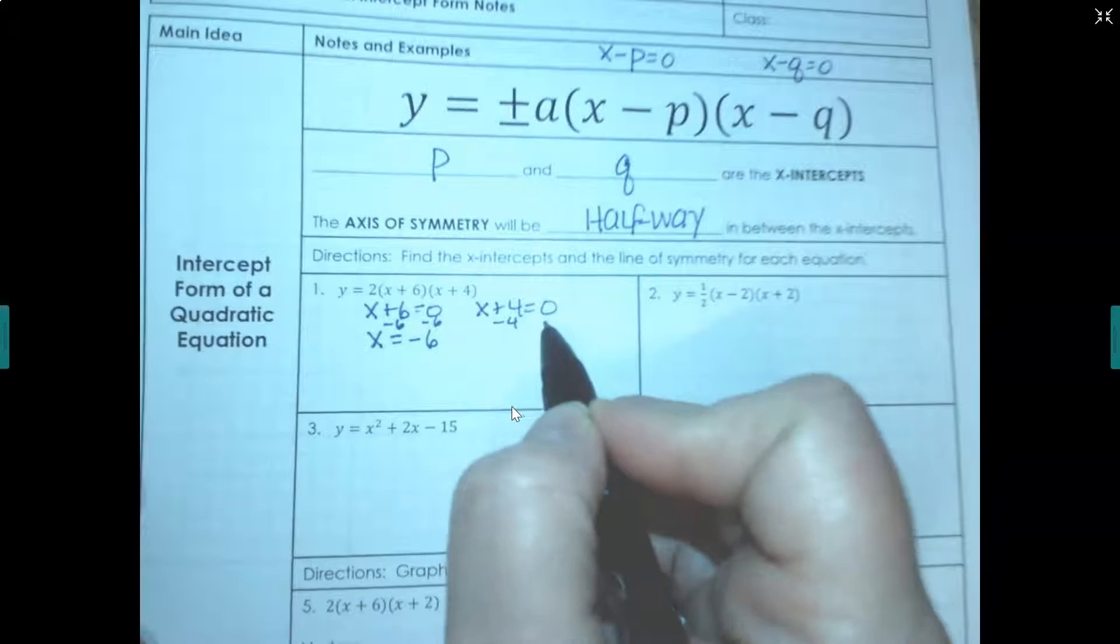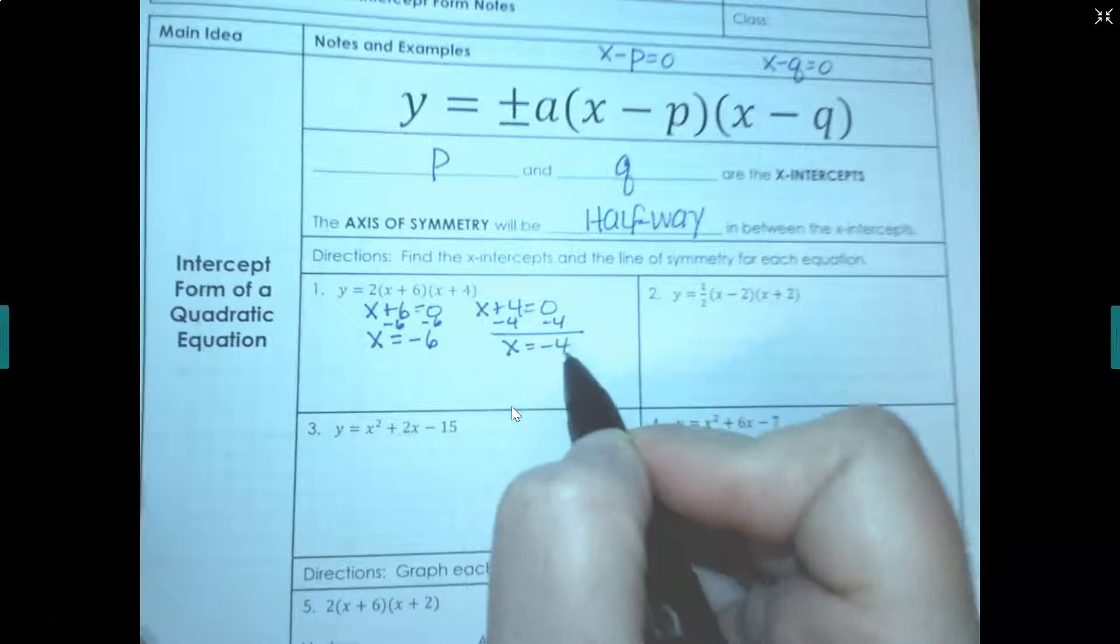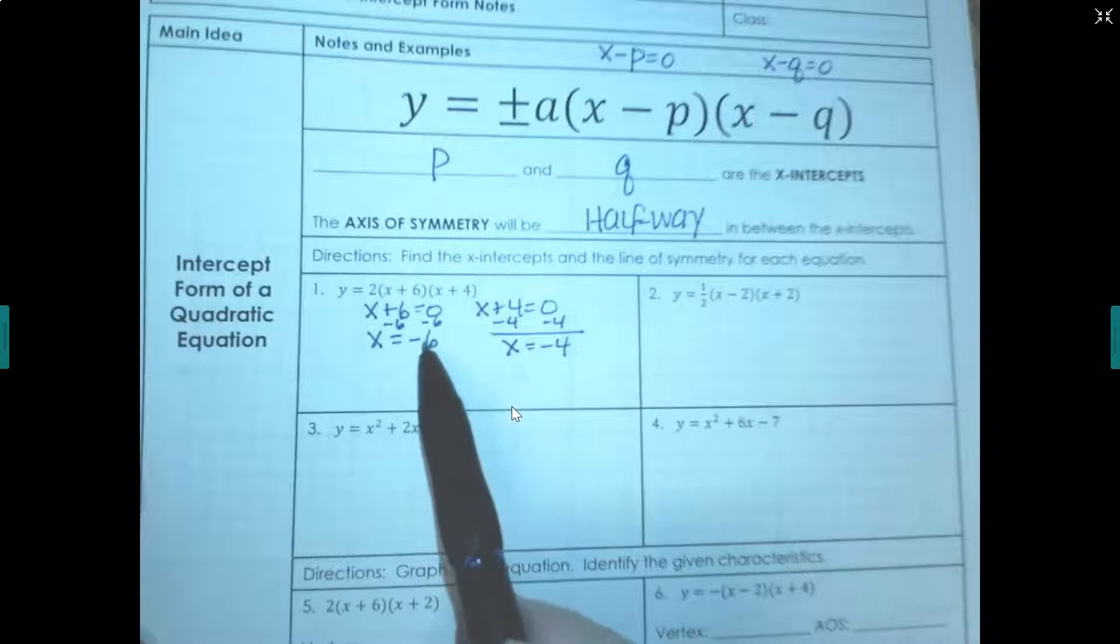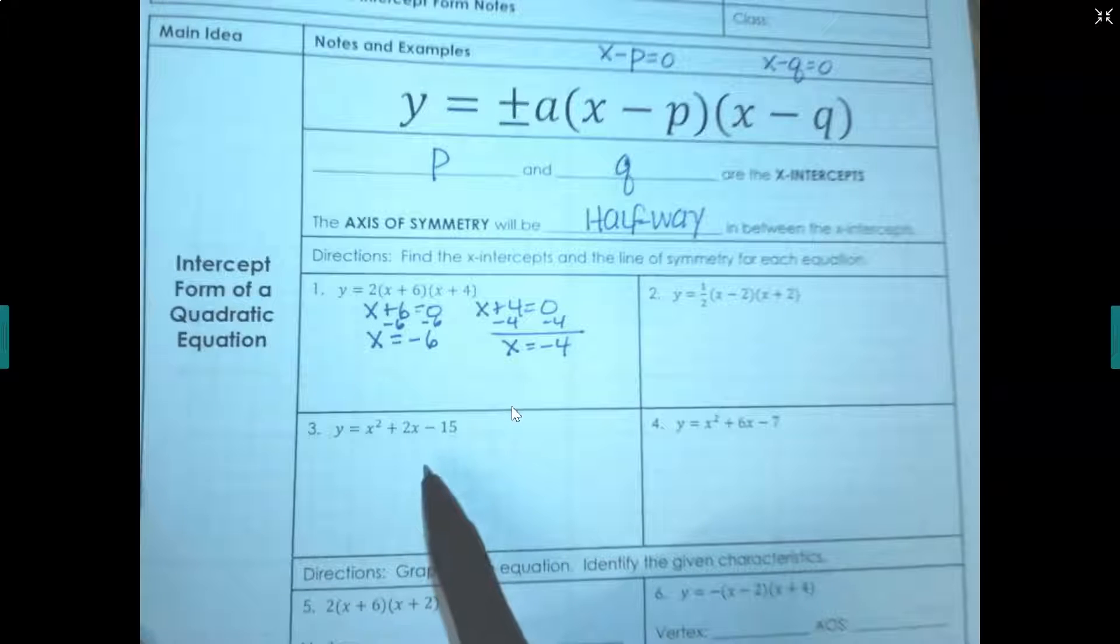If I subtract 4 from both sides to isolate that x, I get x equals negative 4. I now know where the graph is crossing the x-axis and I can ask myself, well what's halfway between negative 4 and negative 6?